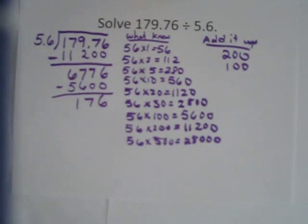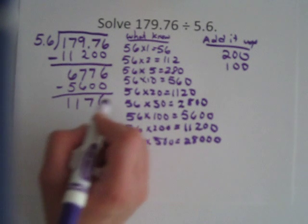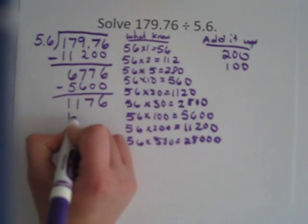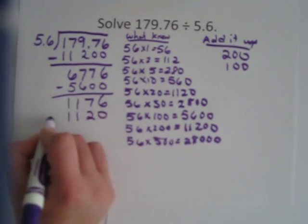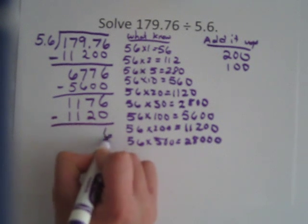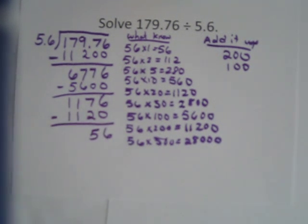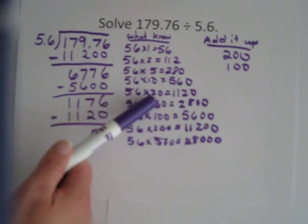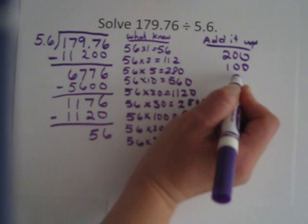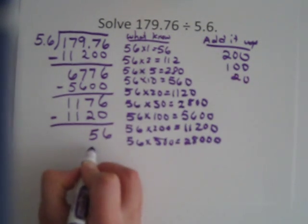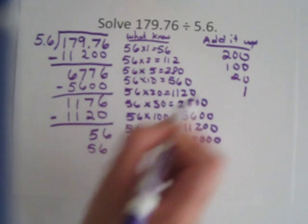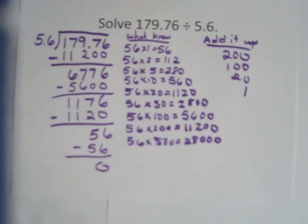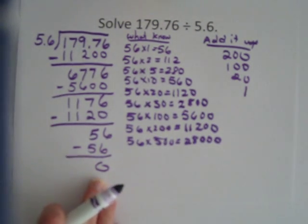I got 176. Oh, I'm sorry, 1,176. And now what's closest to that is this number, 1,120. And now I get an even 56. But I need to put the 1,120 is times 20. And then I'm going to subtract my 56, which will be 1. I get 0, which is good. That's where I want to be.